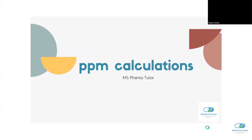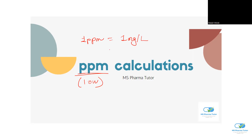Hello everyone, today we are going to look at the PPM calculation. PPM is basically parts per million — a very low concentration unit. One PPM is equivalent to one mg per liter, and it is also equivalent to one mg per kg. This is the low concentration that we will be focusing on.